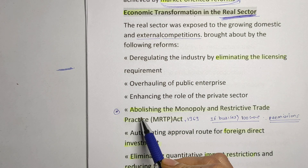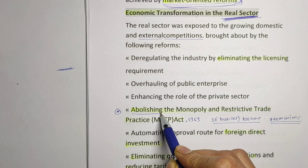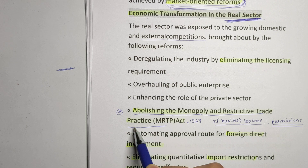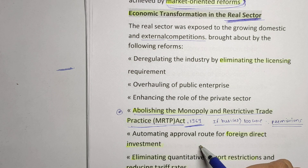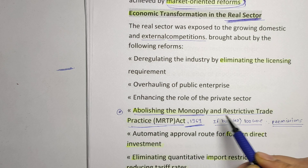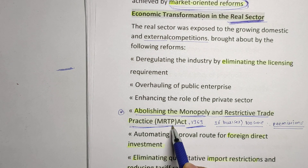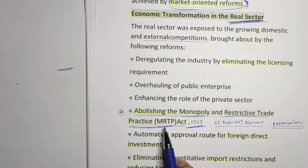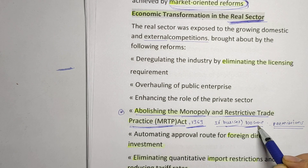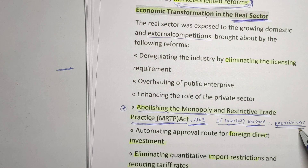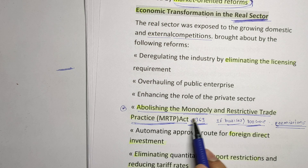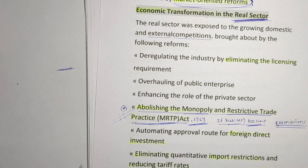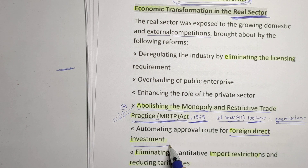The first major reform is abolishing the Monopoly and Restrictive Trade Practice — that is the MRTP Act 1969. It was abolished to open the market, because under this act, if you wanted to do business of more than 100 crores, you needed to take permission from the government. That was a major hurdle for businessmen, so this act was abolished, which really helped grow the Indian economy.